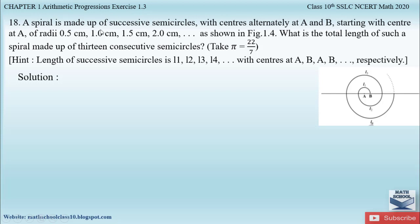Question number 18 from exercise 1.3, chapter 1, Arithmetic Progressions says: a spiral is made up of successive semicircles with centers alternately at A and B, starting with center at A, of radii 0.5 cm, 1.0 cm, 1.5 cm, and 2.0 cm as shown in figure 1.4. What is the total length of such a spiral made up of 13 consecutive semicircles? They also give a hint that the lengths of successive semicircles are L1, L2, L3, L4 and so on with centers A, B, A, B respectively. This is a spiral made up of successive semicircles — one semicircle, then another, and so on, with centers alternating between A and B.